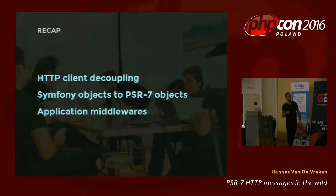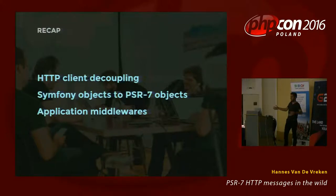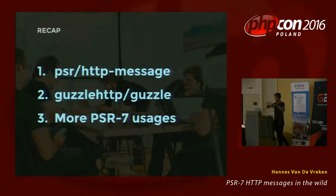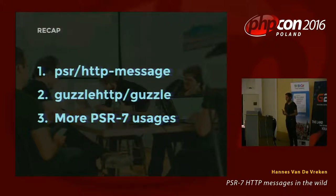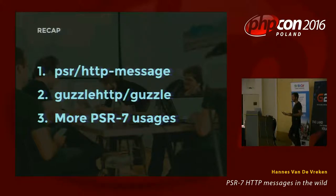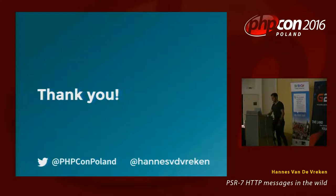As a recap: I talked about Symfony objects and using them in between PSR7 objects, I talked about application middlewares and how you can wrap your application with extra features. PSR slash HTTP message only includes interfaces and there are implementations from Guzzle and Zend. The second chapter covered Guzzle HTTP — sending PSR7 request objects and getting response objects back. And I talked about wrapping your application with PSR7 middlewares. With that, I'd like to thank you.